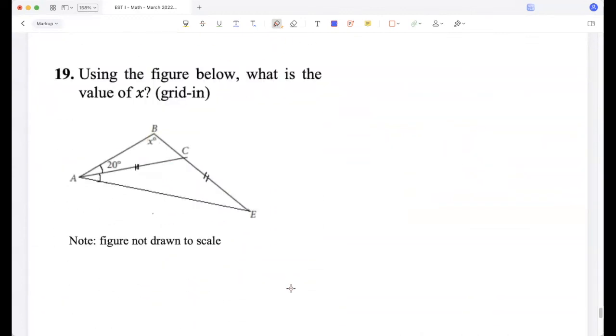Using the figure below, what is the value of x? Okay, this is 20 and this is also 20, and these two sides are equal. So this is also 20. So then this is 40 because this is the external angle. So then x will be 120.